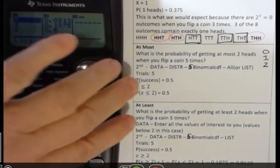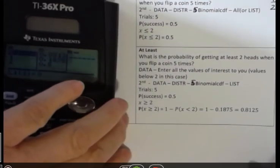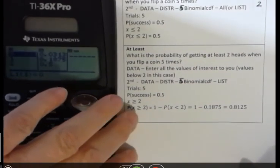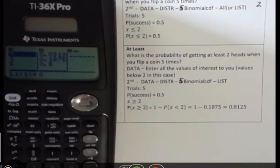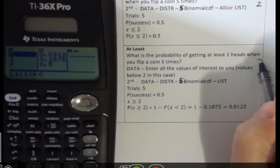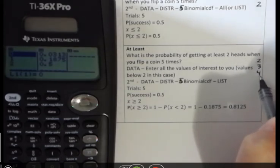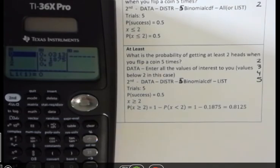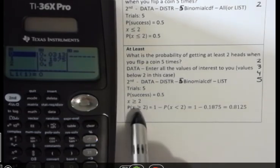And the last one is at least. This is a little harder to do on the calculator, but not that big of a deal. When you're saying what is the probability of getting at least two, and this is five flips again, at least two means you could get two, three, four, or five. At least two or more. So when you're saying at least two, you're actually saying greater than or equal to two.